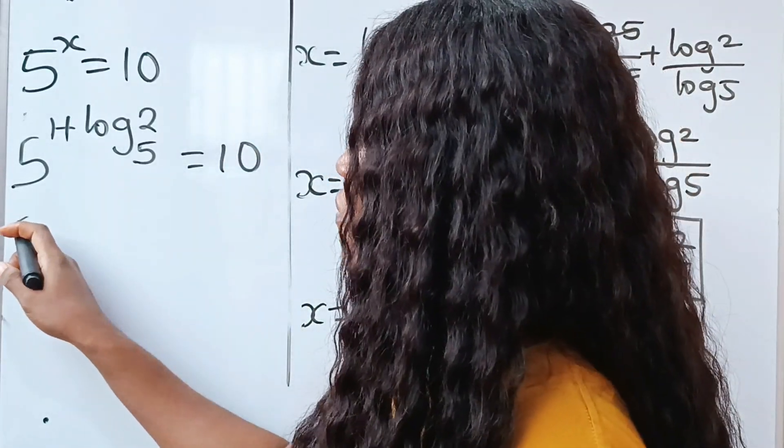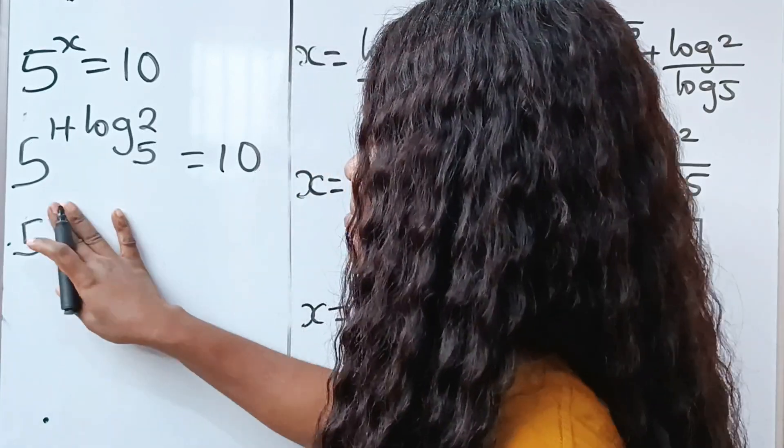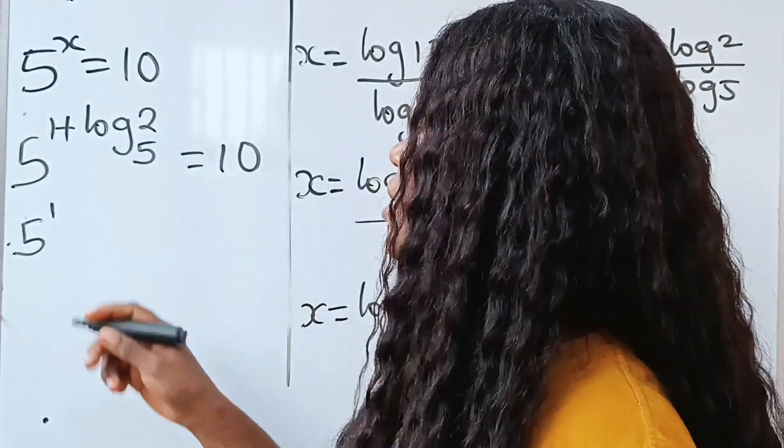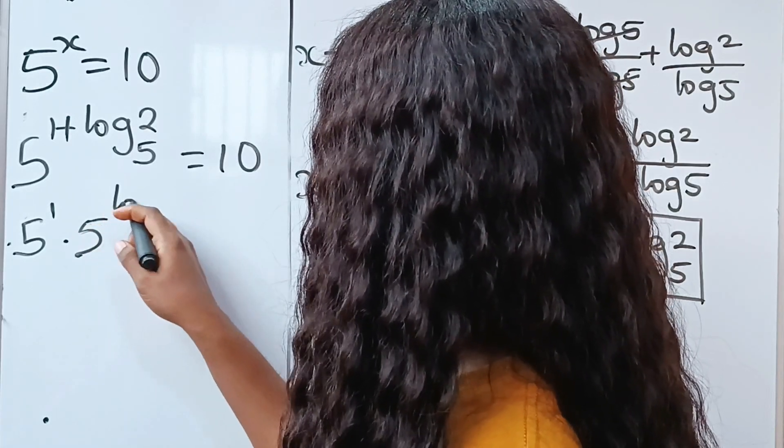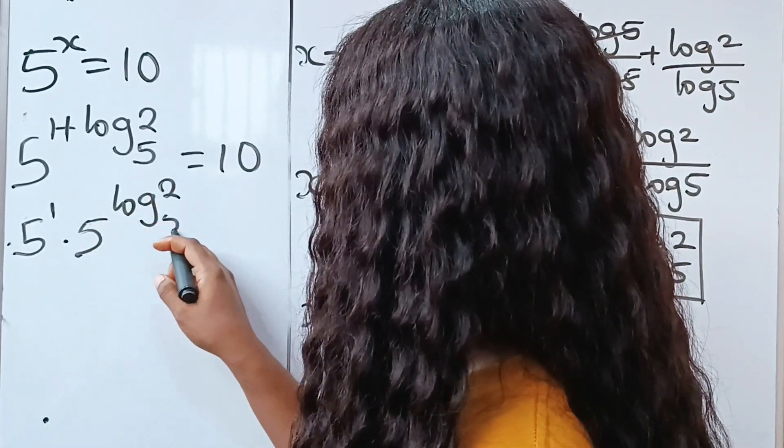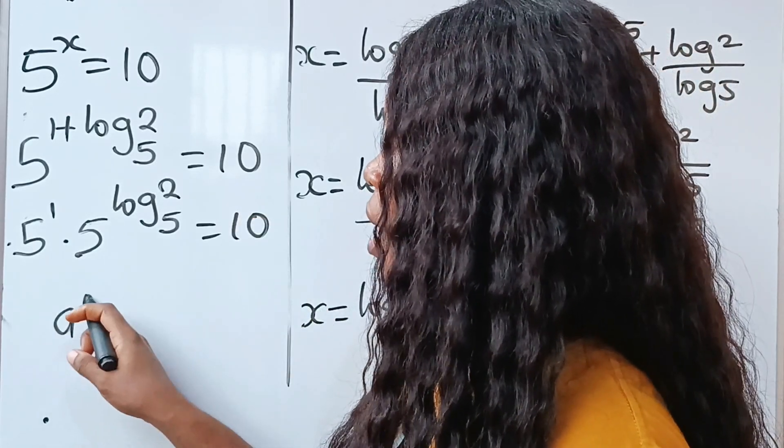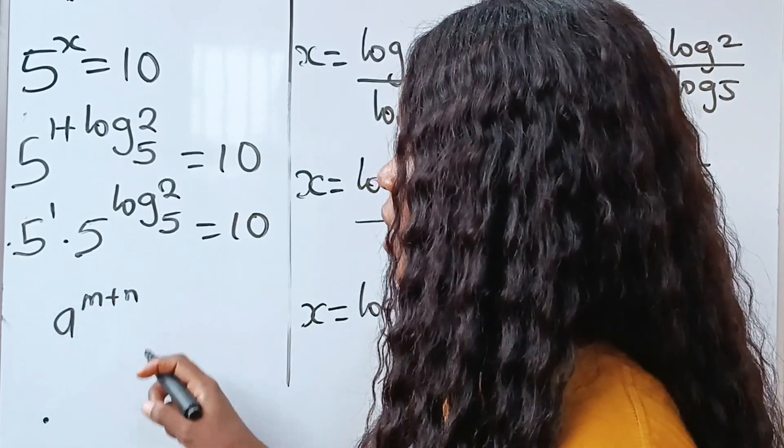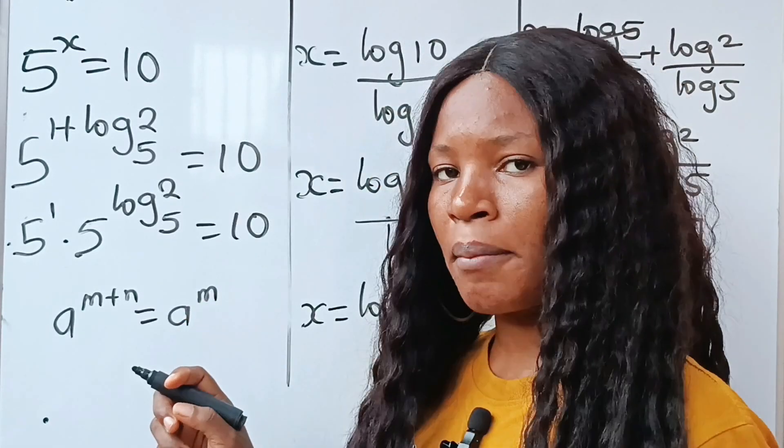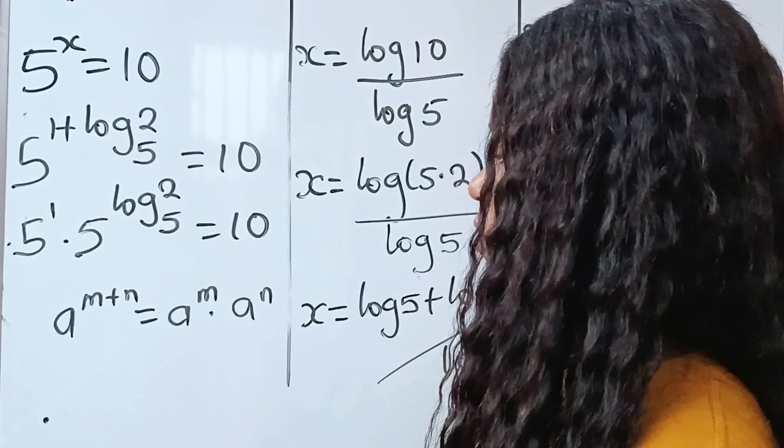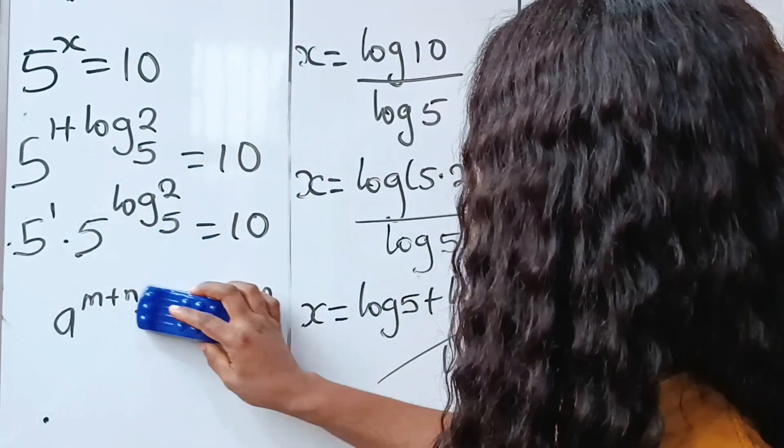We have 5. I'm not left-handed, so manage my writing. 5 to the power of 1 multiplied by 5 to the power of log 2 base 5 is equal to 10. Yes, because when you have a to the power of m plus n, this is the same thing as a to the power of m multiplied by a to the power of n. That is why I expressed this in this form.